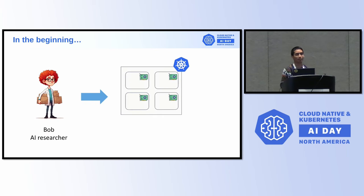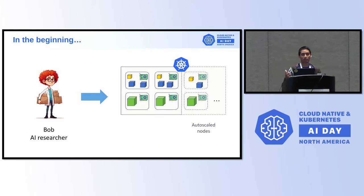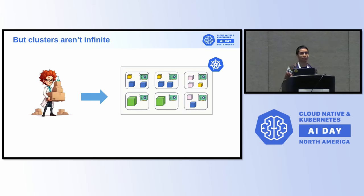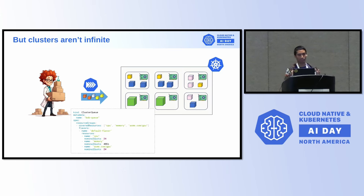Let me explain what problem we're trying to solve. In the beginning, Bob has a cluster with GPUs. He's happy because his jobs all run. Even in the cloud, he might auto-scale as he needs more resources — the cluster autoscaler brings more nodes. But clusters are not infinite, so Bob might have extra tasks and we need to queue them. That's when Kueue comes in, and we can represent the quota for this user, Bob, using a cluster queue definition, setting different numbers for the capacity of each resource.